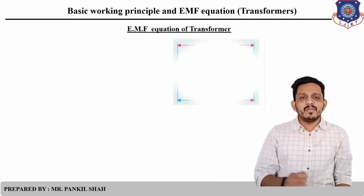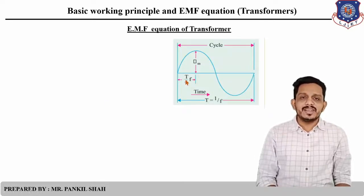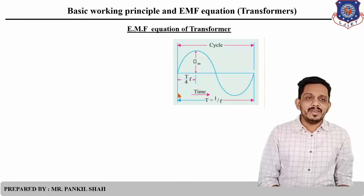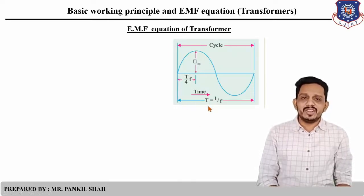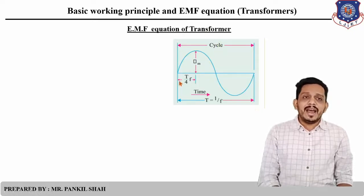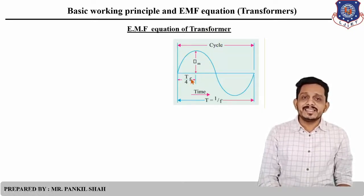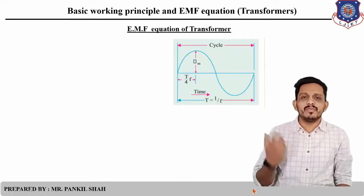Now let us derive the EMF equation of a transformer. To understand this, we consider a sinusoidal waveform of one cycle. This one cycle takes capital T time, or equivalently 1/F time to complete. This is the graph of flux versus time, and this one cycle has a maximum value of flux φm. The time to reach the maximum flux is T/4, which equals 1/(4F). This is the basic sinusoidal waveform of the alternating flux.